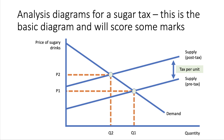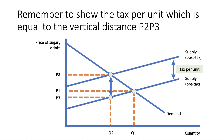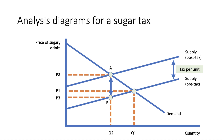This basic diagram showing the effect of a tax will score some marks, but the point of this video is to develop the diagram to get better marks in your exam. The first thing we can do is show how much tax revenue the government gets. The tax per unit is the vertical distance P2 to P3. The consumer pays P2 after the tax; the producer then pays the tax to the government; P3 is the price the producer keeps after the tax. That distance P2 to P3 is the tax per unit, so you can show the total tax revenue, which is the area P2 A B P3. You can also show that most of this tax is paid by the consumer and a little bit is absorbed by the producer.